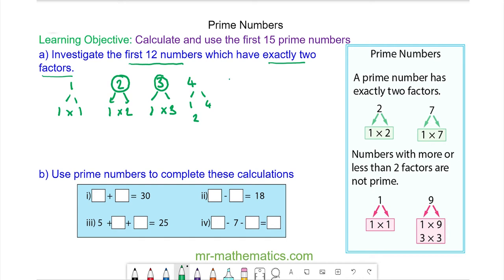We'll try two more. Five has two factors, one multiplied by five, which means it is prime. And six, which is one and six, two multiplied by three, has four factors so it is not prime.